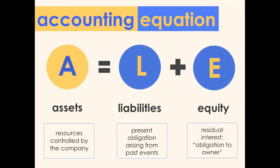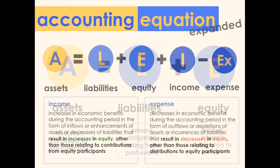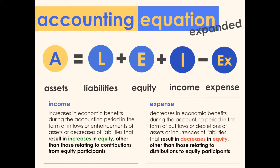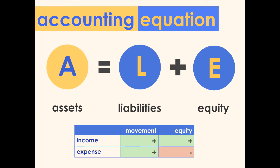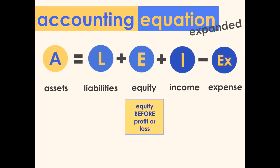The accounting equation can actually be expanded to include income and expenses. The expanded equation is: Assets equals Liabilities plus Equity plus Income minus Expenses. Recall that income results in increases in equity while expense results in decreases in equity — this is why we have plus income and minus expense. If we use the simpler equation, the impact of income and expense is reflected under equity. One important thing to note is that equity here pertains to the equity balance before profit or loss — before recognizing any income or expense.